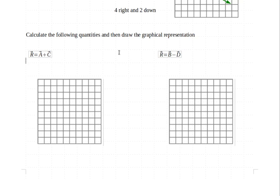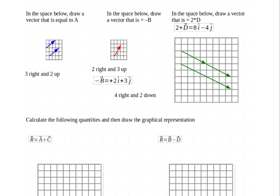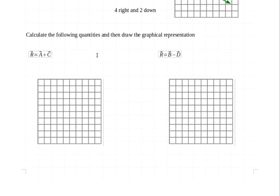So now we've gotten through the top half of our worksheet and we're going to move on to the bottom half. Calculate the following quantities and then draw the graphical representations. So we have one which is a vector addition and one which is a vector subtraction.